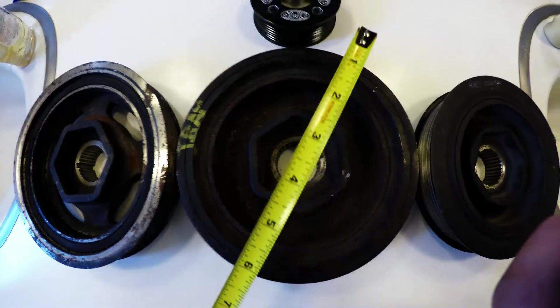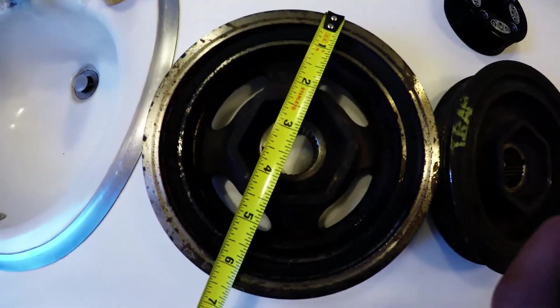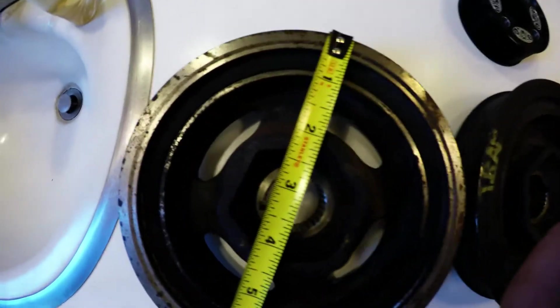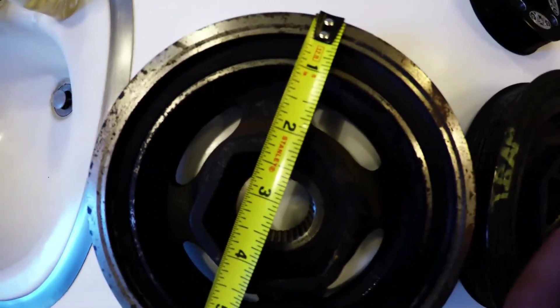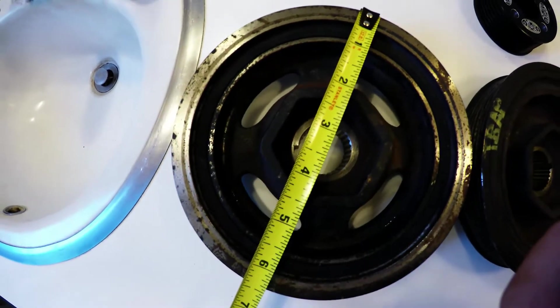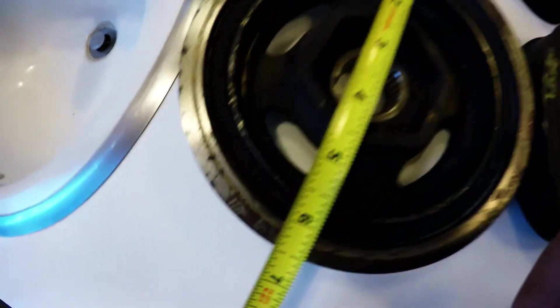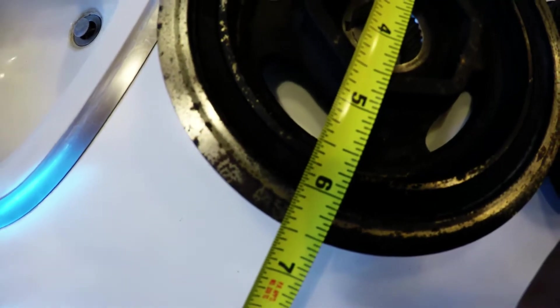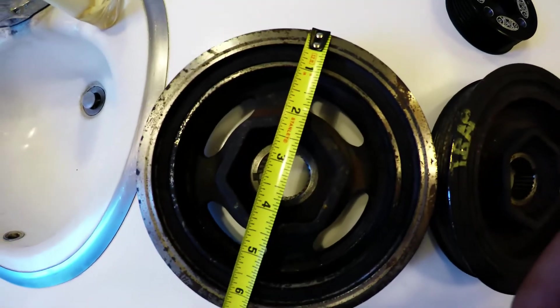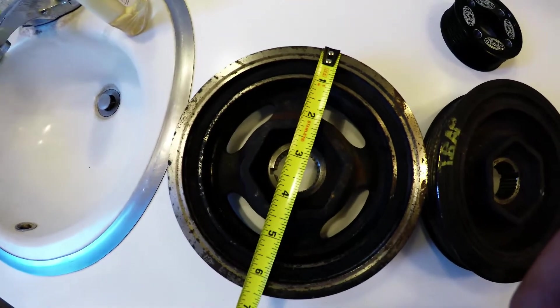Then last but not least we have here, if you guys are wondering how come this one looks so different, this pulley actually came off of a K24A, which is a Japanese K24 Honda Accord. They call it in Japan. So this one measures at six and a half inches.